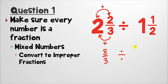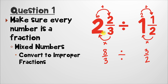Let's bring down our division symbol and now do the same exact thing to one and one-half. The first thing we'll do is take our denominator, two, and multiply it by our whole number, which is one. Two times one is two. Then the next step is to add the result to the numerator we have, so that's two plus one, which gives us three. The last thing is to keep our denominator exactly the same — our denominator is two. So our original problem, two and two-thirds divided by one and one-half, becomes eight over three divided by three over two.